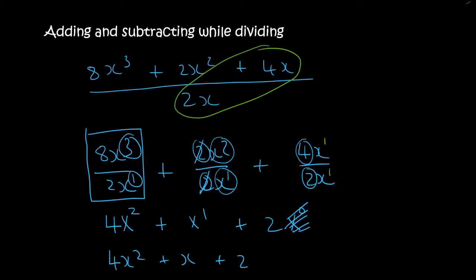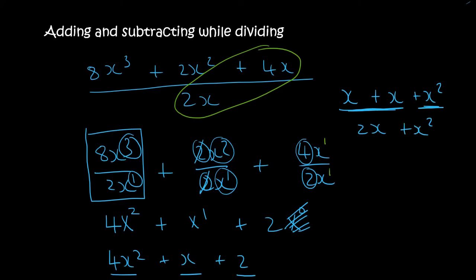But shouldn't we put these together now? Remember, when we looked at the very first lesson of this chapter, we looked at how to add like terms. We can only put them together if they are the same. Like x plus x plus x² — the x and the x are the same so we said 2x, but we couldn't add the x² part. So this is the answer.